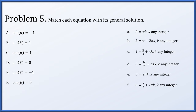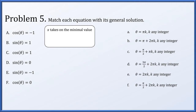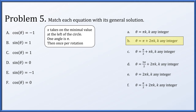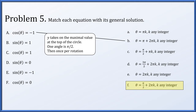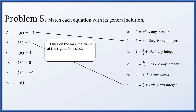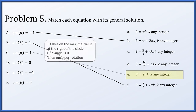In problem 5, we match six equations to six general solutions. Cosine of theta equals minus 1 corresponds to the leftmost point on the circle at angle pi, repeating every full rotation: solution is pi plus 2 pi k (option b). Sine of theta equals 1 corresponds to the top of the circle at pi over 2, once per rotation: pi over 2 plus 2 pi k (option f). Cosine of theta equals 1 is at angle zero, once per rotation: 0 plus 2 pi k (option e).